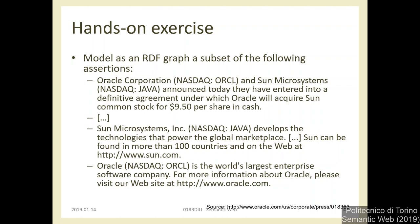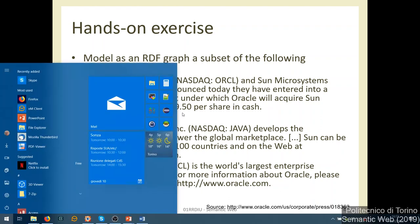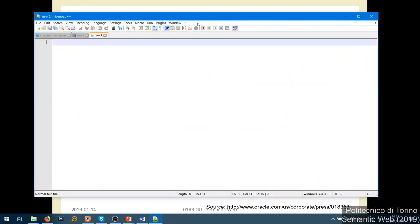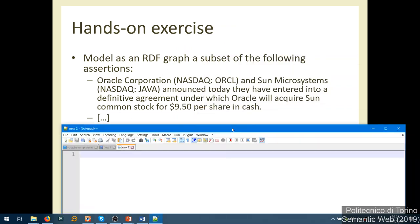We should focus on the facts described in this text. If I were an investor looking at the dynamics of company prices, some information here is important: information about one company, information about another company, and key information about an acquisition. So how can we write it in Turtle? There's some information which is easy about the companies. First we need to decide what identifier to use for these two companies.